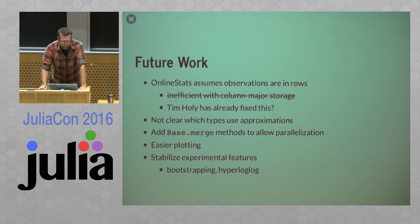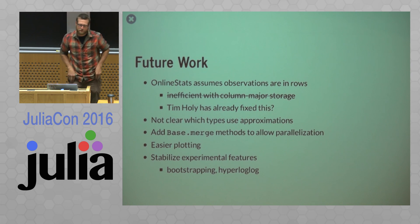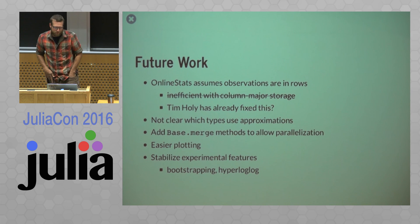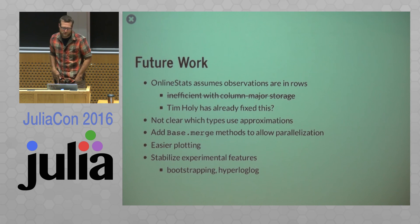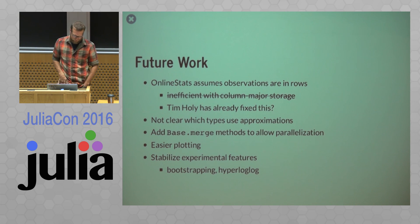Alright, so some of my future work for online stats. So it seems observations are in rows, and this is inefficient with column major storage, but as Tim Holi talked about this morning, he may have already fixed this, so I may not have to re-implement anything. So this might already be done for me, which would be great.